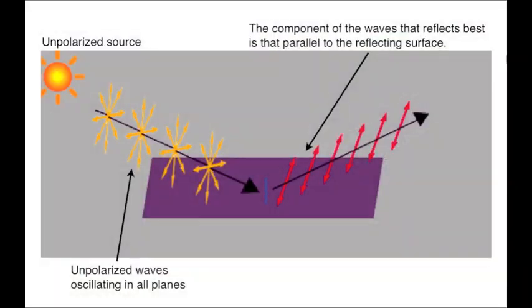The sunlight reflecting on this water is not polarized. The waves within it are oscillating in all directions. The part of that light that reflects best are those waves which are oscillating parallel to the surface from which they are reflecting. Those oscillating vertically are not completely eliminated, but they are reduced.